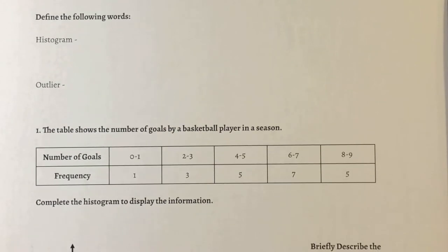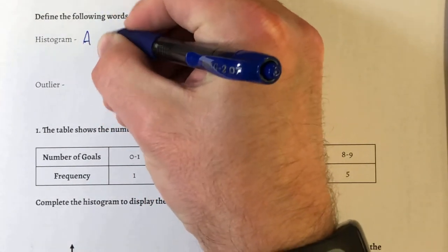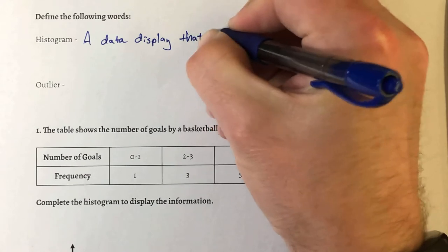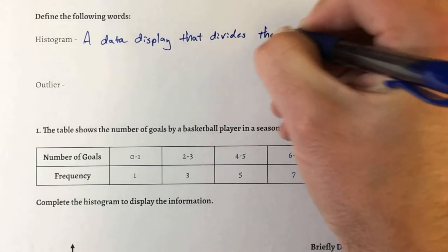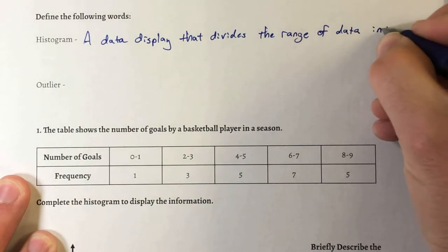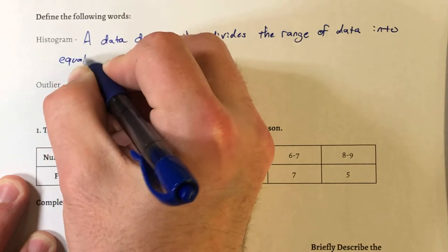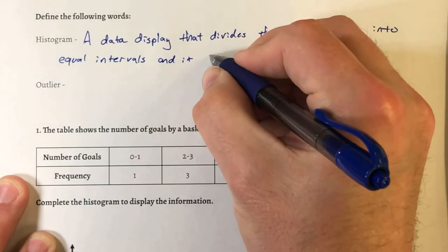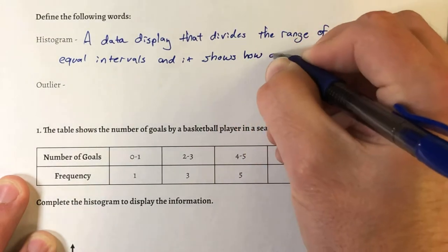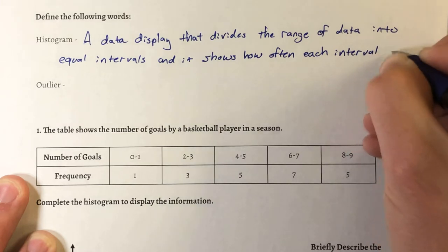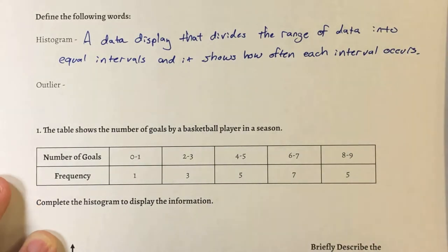We have two vocabulary terms to go over. First is histogram. A histogram is a data display that divides the range of data into equal intervals and shows how often each interval occurs. So a data display that divides your range of data into equal intervals and shows how often each interval occurs.